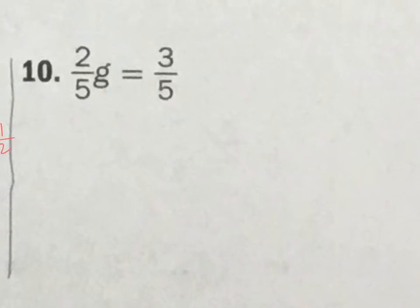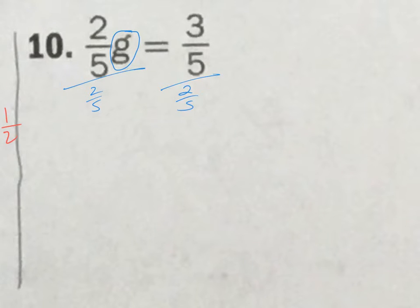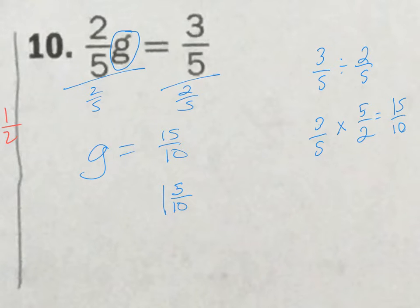Another fraction! Number 10. I'm going to make this big and circle my variable. It's 2 fifths times g. So I want to divide this by 2 fifths, and divide this by 2 fifths. This gets me g equals 3 fifths divided by 2 fifths. Keep-change-change: keep 3 fifths, change to multiplication, change 2 fifths to 5 over 2. 3 times 5 is 15, 5 times 2 is 10 — so I get 15 tenths. Putting that into a mixed number: 10 goes into 15 one time, giving 1 and 5 tenths. Reducing 5 tenths, I get 1 and 1 half. So g equals 1 and 1 half.